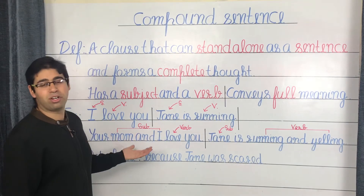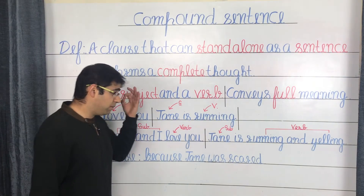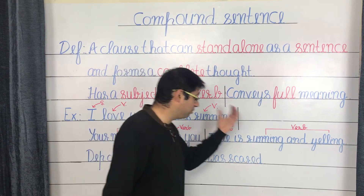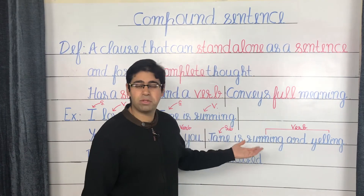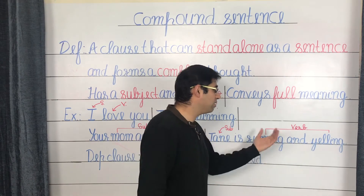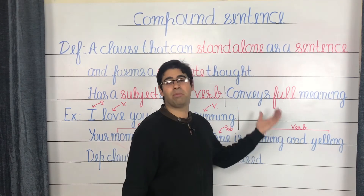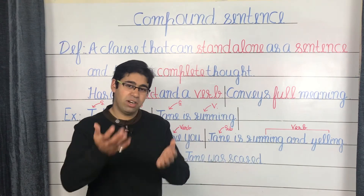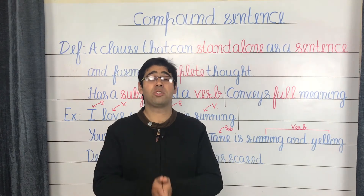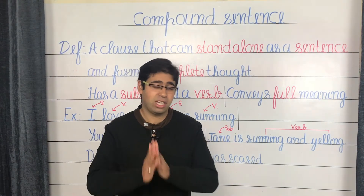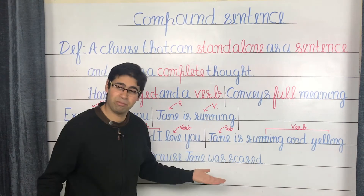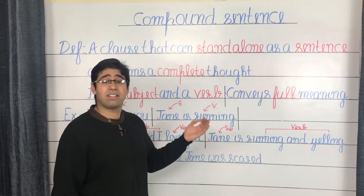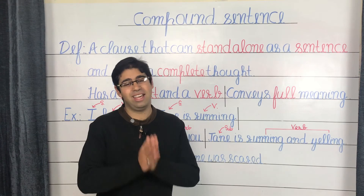Similarly, the verb may also be divided into two parts, such as 'Jane is running and yelling' — running and yelling together serve as the verb. You can further your understanding of the independent clause by comparing it to a dependent clause, which is an incomplete thought such as 'because Jane was scared.' What happened if Jane was scared? It's an incomplete thought, as compared to independent clauses, which are complete in meaning.